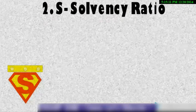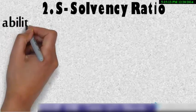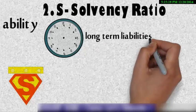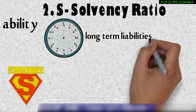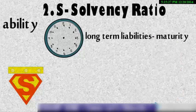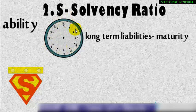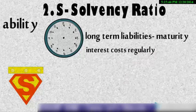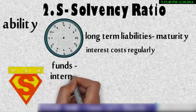Now comes S for solvency ratio. Now this solvency ratio tells us about the ability. Now here you see a clock but clock does not have that needle. So this means a clock is telling us about the ability of a firm to pay the long term liabilities which are not going to mature today not tomorrow. These are long term liabilities so the firm's ability to pay long term liabilities when they are going to mature and their interest cost which are to be paid regularly. So it tells us about the long term solvency position.